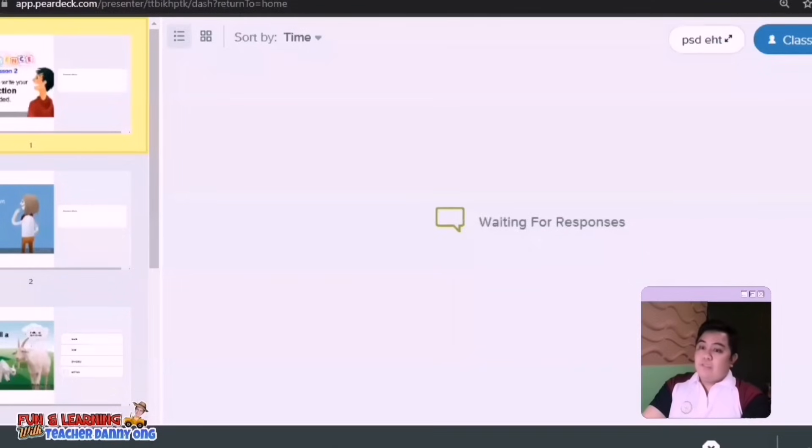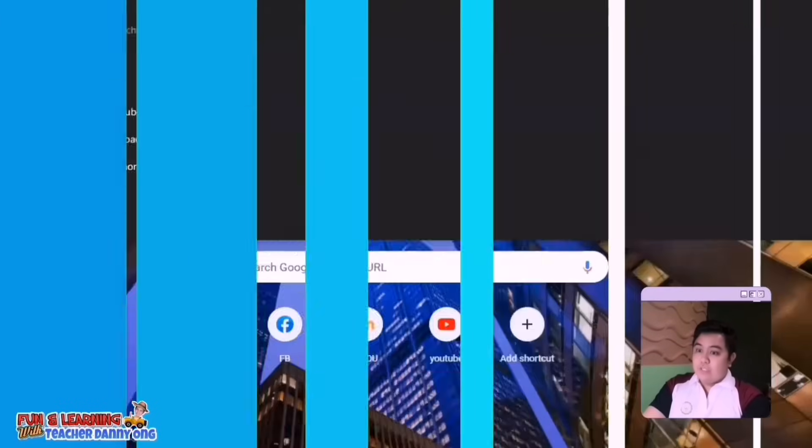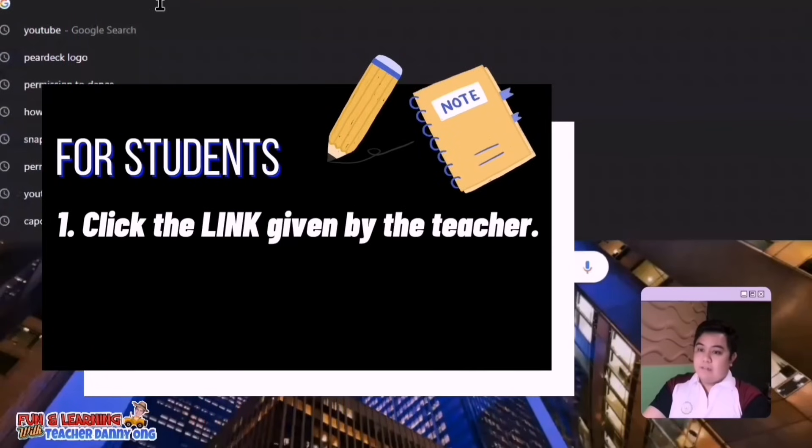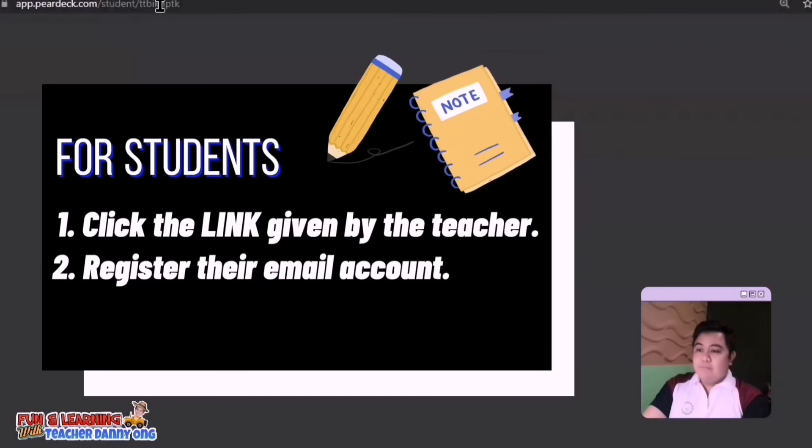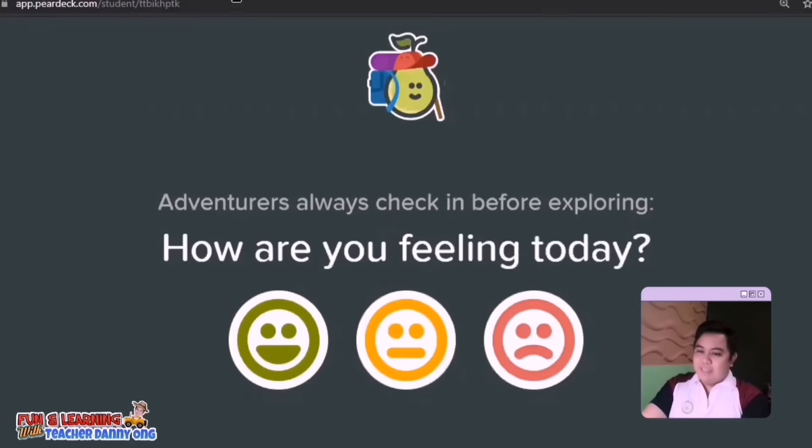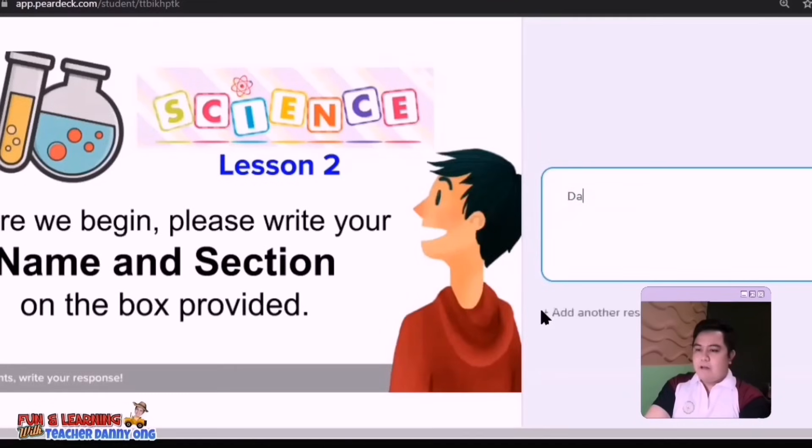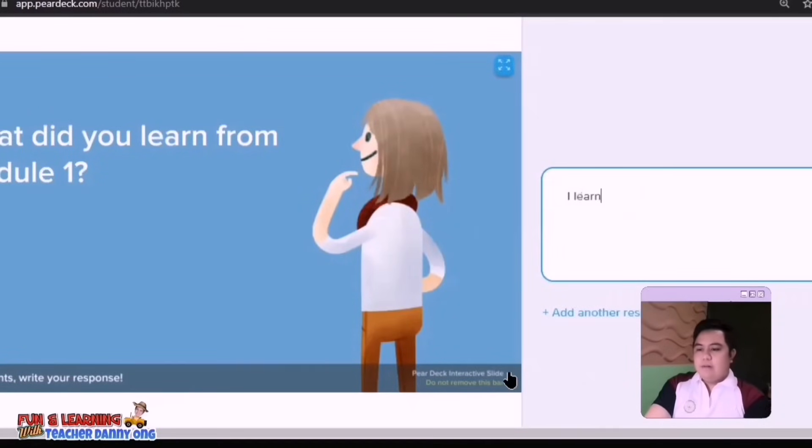So let's say you are the students and you were given the link. Now the first thing they need to do is click the link, register their email account, and start answering. So let's try to answer the one that we prepared a while ago as if we are one of the students. Let's try to answer this. Let's key in first our name, our grade level. Then what did you learn? I learned about animals and their habitat. And animals have families just like us.